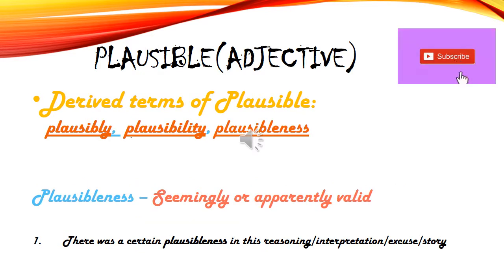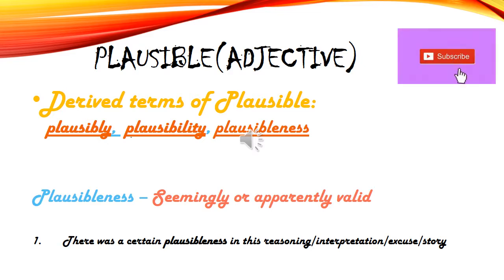Third derived term: plausibleness — means seemingly or apparently valid. Example: There was a certain plausibleness in his reasoning. Jab hum kisi ki reasoning, interpretation, news story, ya movie dekhte hain aur conclusion pe aate hain ki 'there was a certain plausibleness' — matlab jo dikhaya gaya, wo ho sakta hai, it is possible literally, koi bhi aisa kar sakta hai. Jaise movie mein fighting dekh ke lagta hai yeh real life mein bhi ho sakta hai.